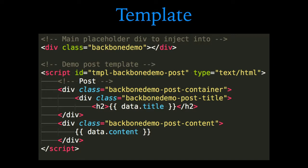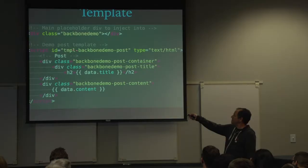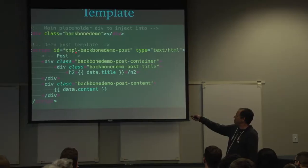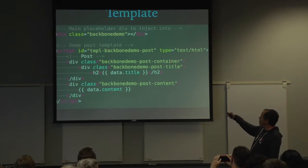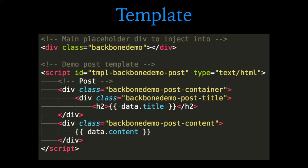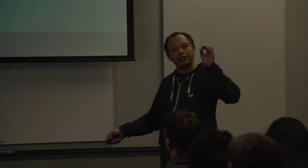Here's the template — just simple HTML. This little script wrapper tag is very special: because it's type text/html, the browser will ignore it, but Backbone knows how to find it. Backbone's going to look for something with an ID of tmpl-backbonedemo-post. Inside the h2 tag we're going to have whatever data.title is — that gets rendered in that spot. And similarly down here for the content, data.content. So those are our two data points: the post title and the post content.